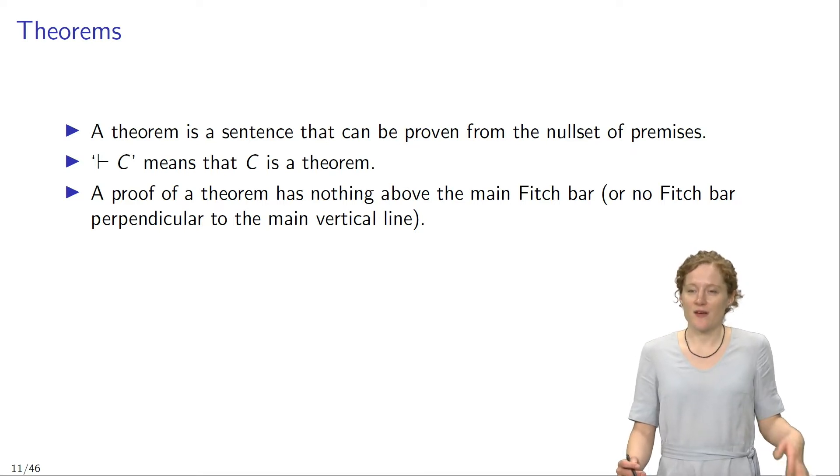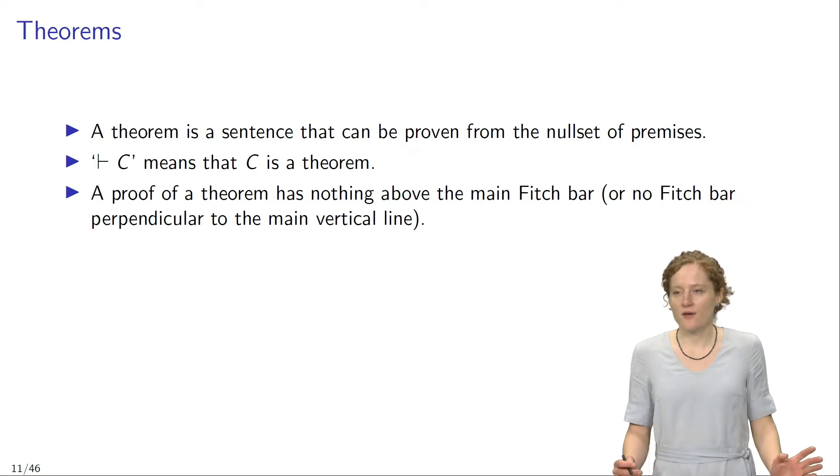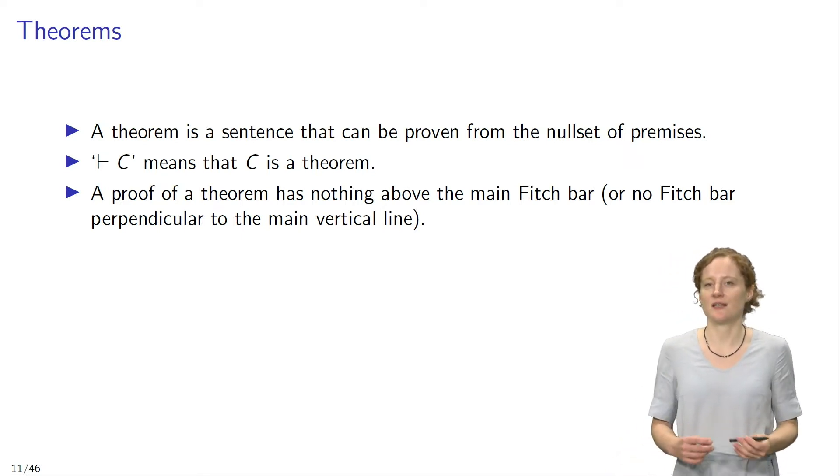A proof of a theorem has nothing above the main Fitch bar or very often people who prove a theorem also simply omit the main Fitch bar, meaning there's no Fitch bar perpendicular to the main vertical line.